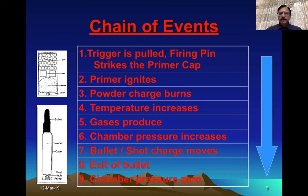When the trigger is pulled, the firing pin is released and it strikes the primer cap. Within the primer cap there is primer which ignites, producing a flame that enters into the main compartment where the gunpowder or charge powder is. It burns, temperature starts rising, gases start producing, and a tremendous amount of pressure starts increasing within the chamber. This pressure then releases the bullet or pellet and pushes it forward out of the weapon.